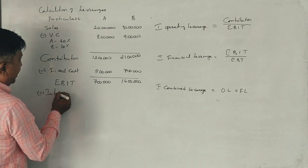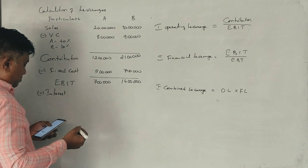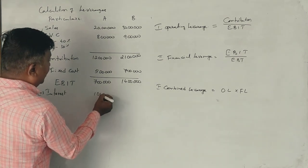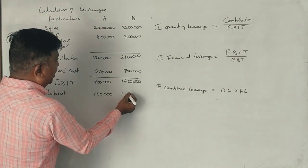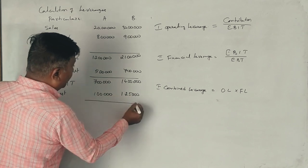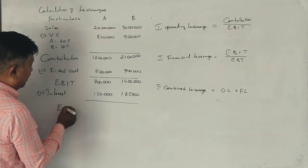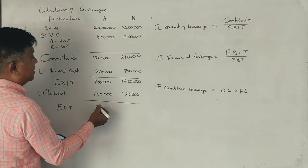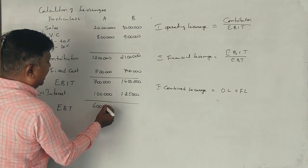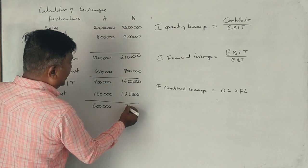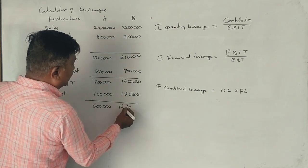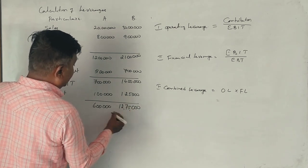Interest: 1 lakh and 1 lakh 25,000. EBT: 6 lakhs and 12 lakhs 75,000.